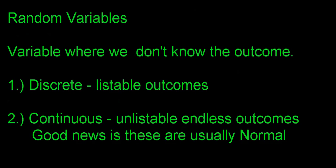In this AP stats test review we're going to talk about random variables. It's a really broad topic but we're just going to cover some quick things in this video. A random variable is a variable where we don't know the outcome. For example, how long is it going to take me to take a shower tonight? I don't know — that's a random variable. If I roll a die, that's a random variable too — I have no idea what's going to happen.